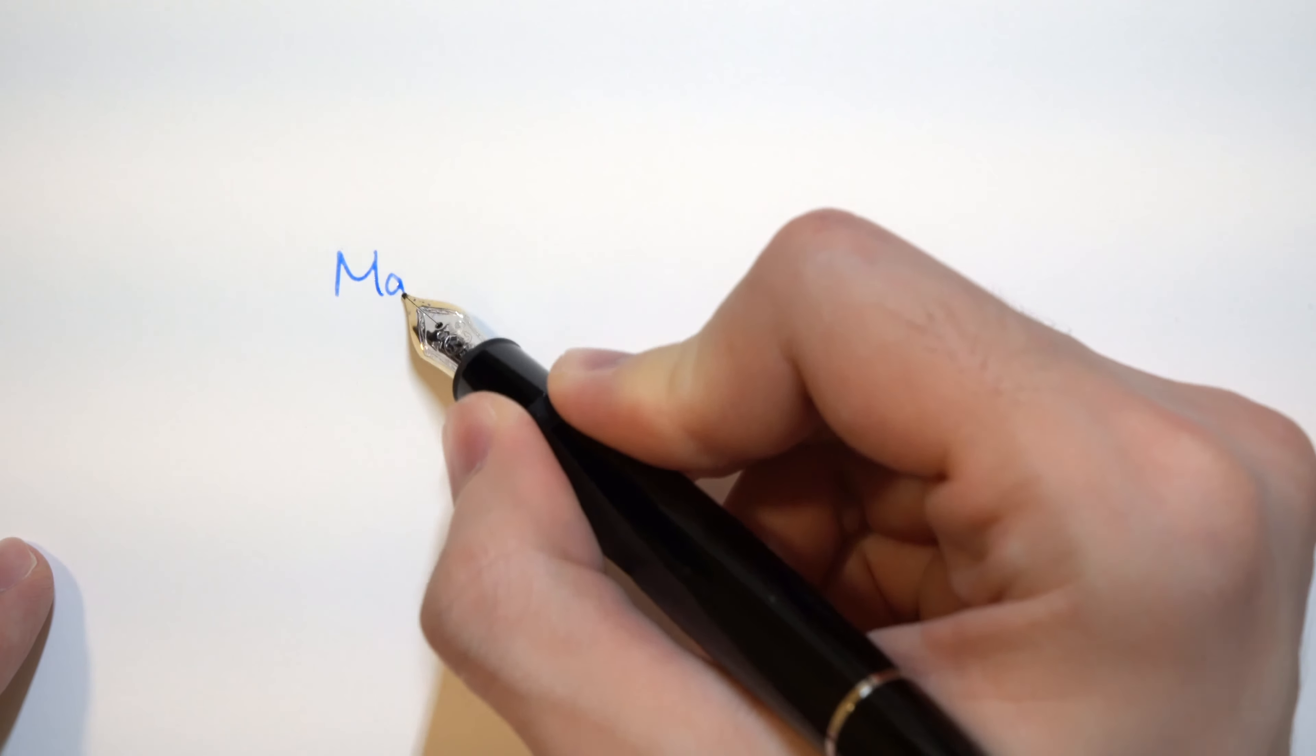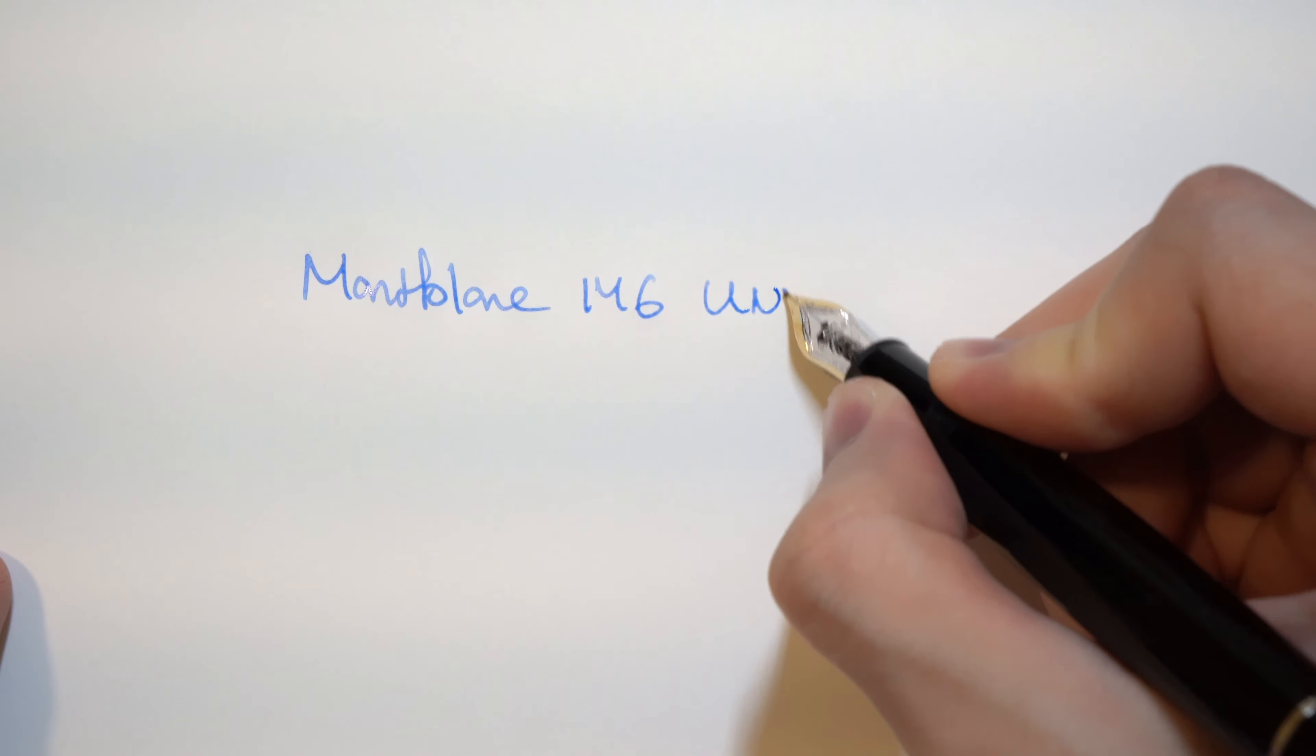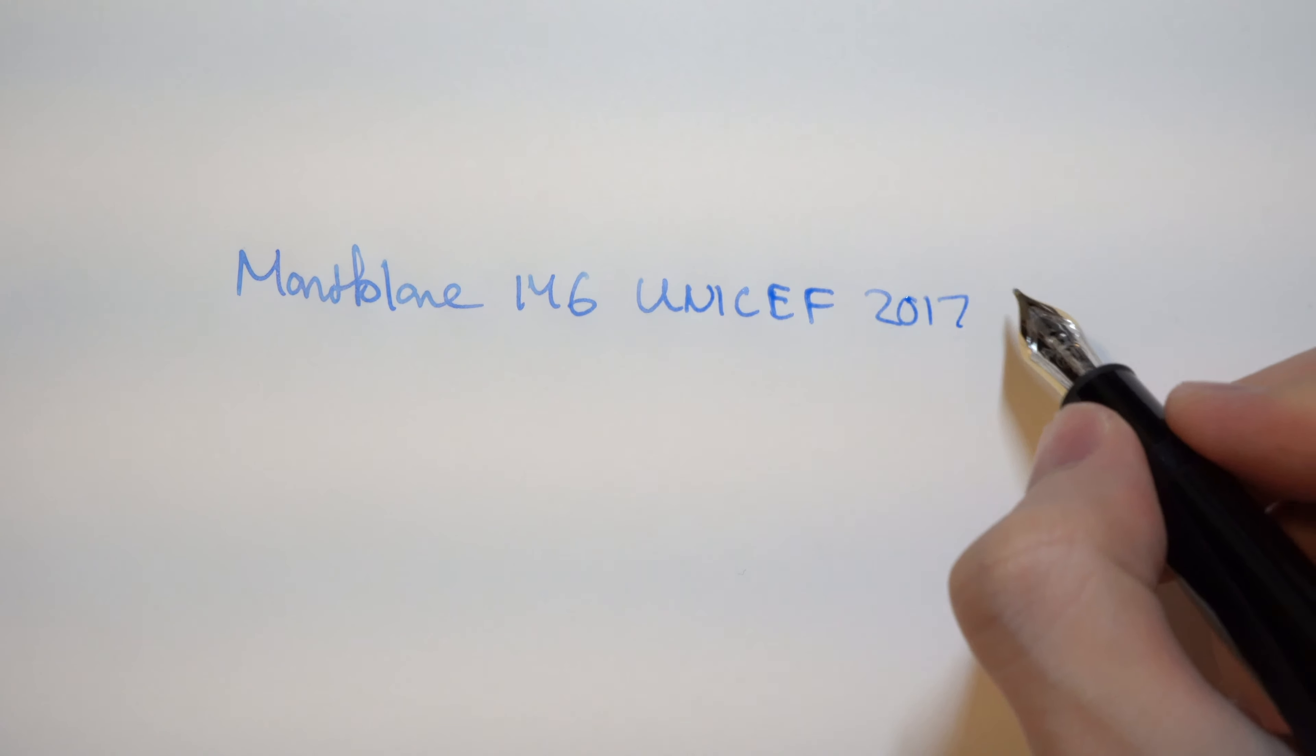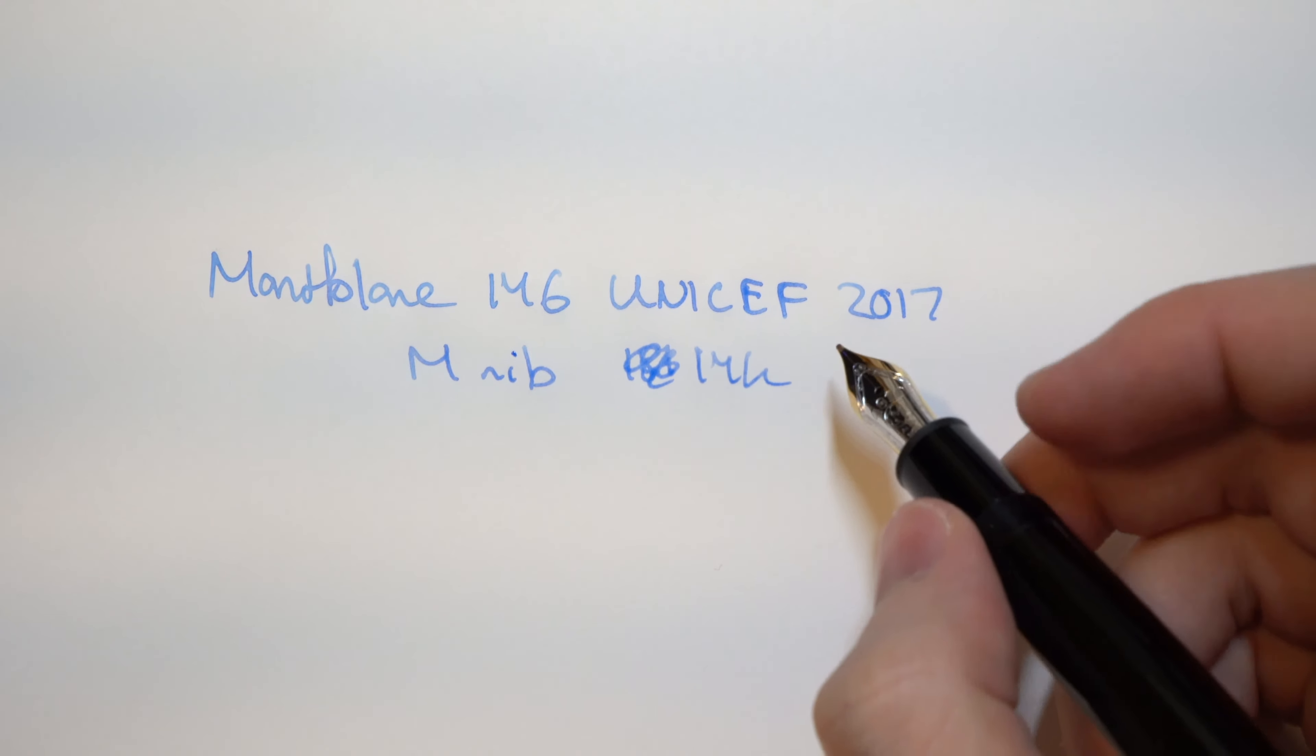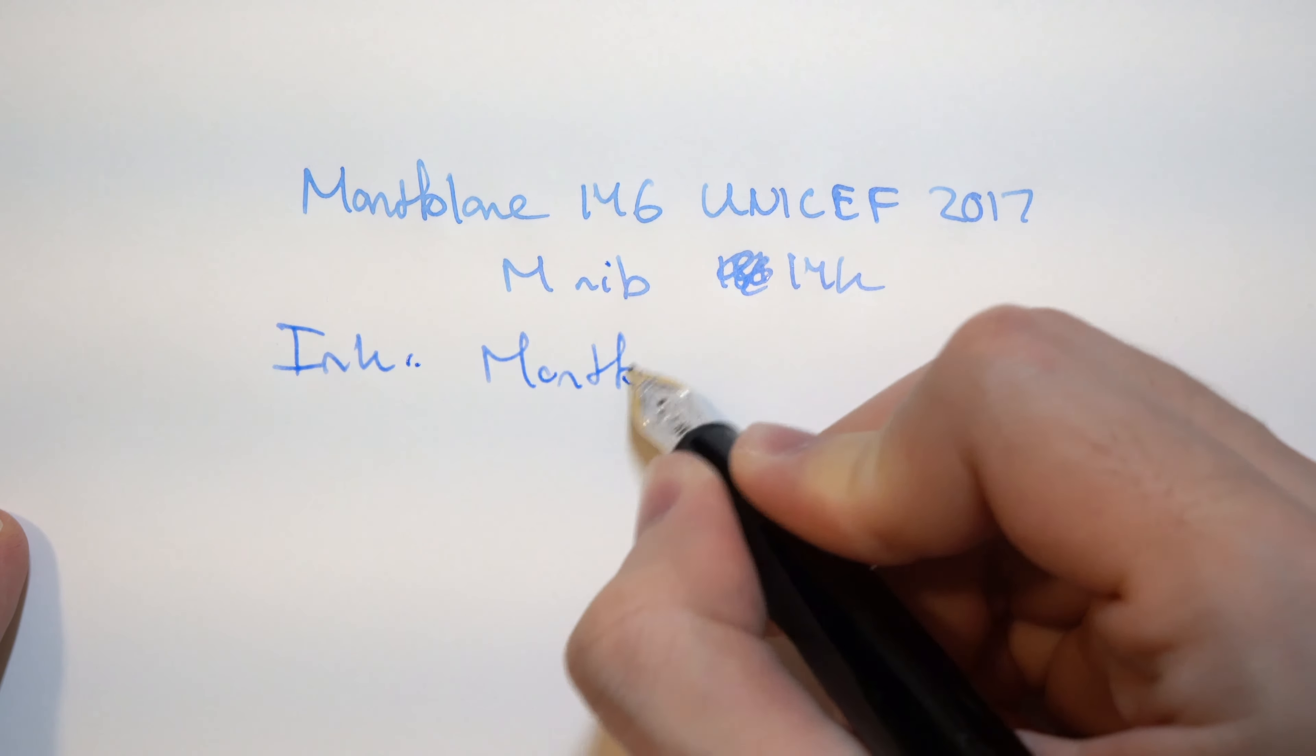Now in terms of writing, the 146 is a 14 karat gold nib compared to the Sailor 1911 Large which is a 21 karat gold nib. Even if you think the 21 karat gold nib with more gold content would be softer, but that's not the case. If you know anything about Sailor, it's that they're stiff nibs and that goes for the same for the 146. This is a stiff nib. There's no line variation and you will have feedback, not just audible but physical feedback as well. And that is expected of Montblanc nibs because they're known for that.